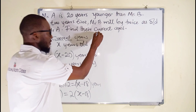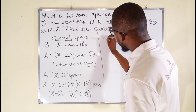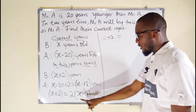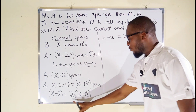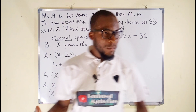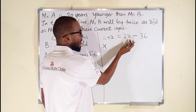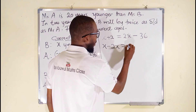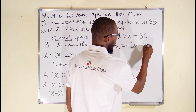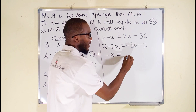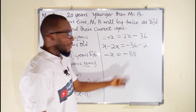We have x plus 2 on the left. On the right, 2 multiplied by x is 2x, and 2 multiplied by 18 is 36, so we get 2x minus 36. Collecting like terms: bring the 2x to the left — it becomes negative 2x — and bring the 2 to the right — it becomes negative 2. This gives x minus 2x equals minus 36 minus 2, so minus x equals minus 38. The negatives cancel, giving x equals 38.